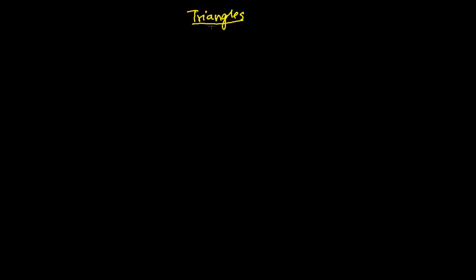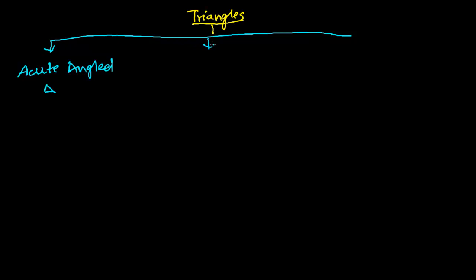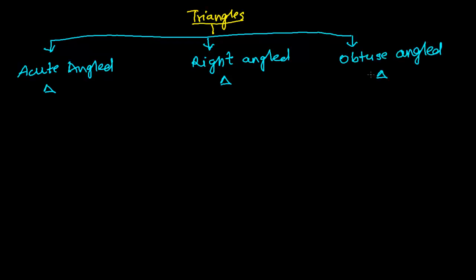So what are those types? The first type of triangle based on the angles is the acute angle triangle. The second one is the right angled triangle. And the third type is the obtuse angle triangle. So there are three major types: acute angle triangle, right angled triangle, and obtuse angle triangle.